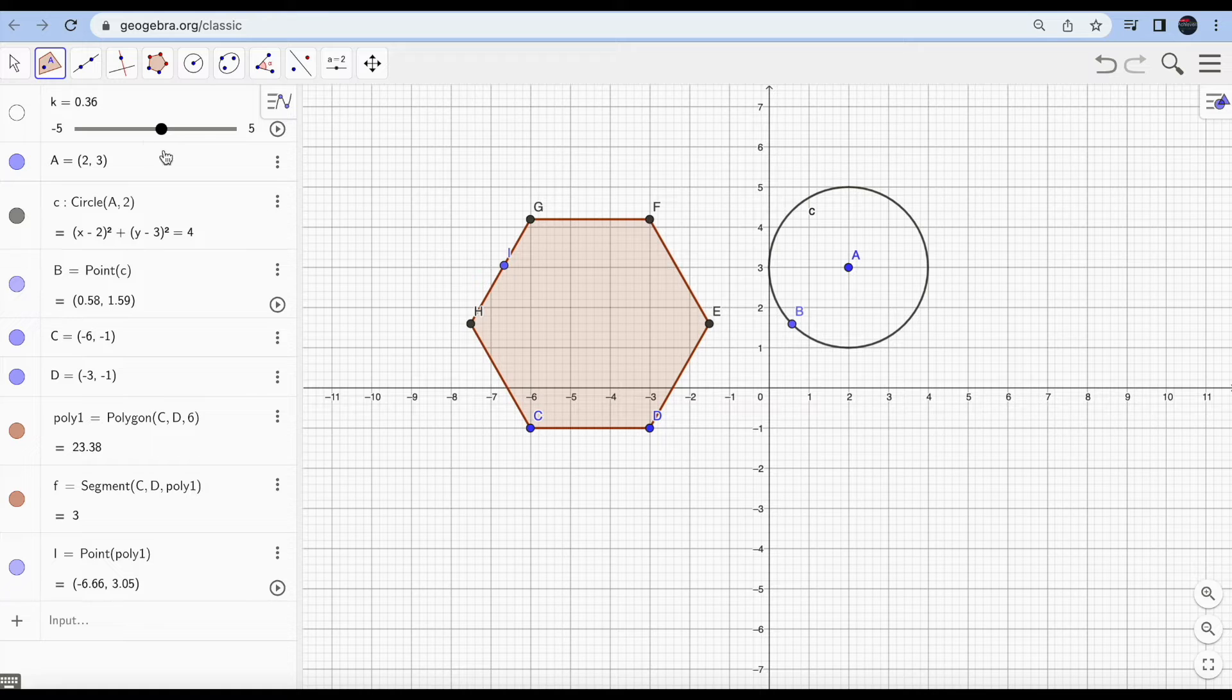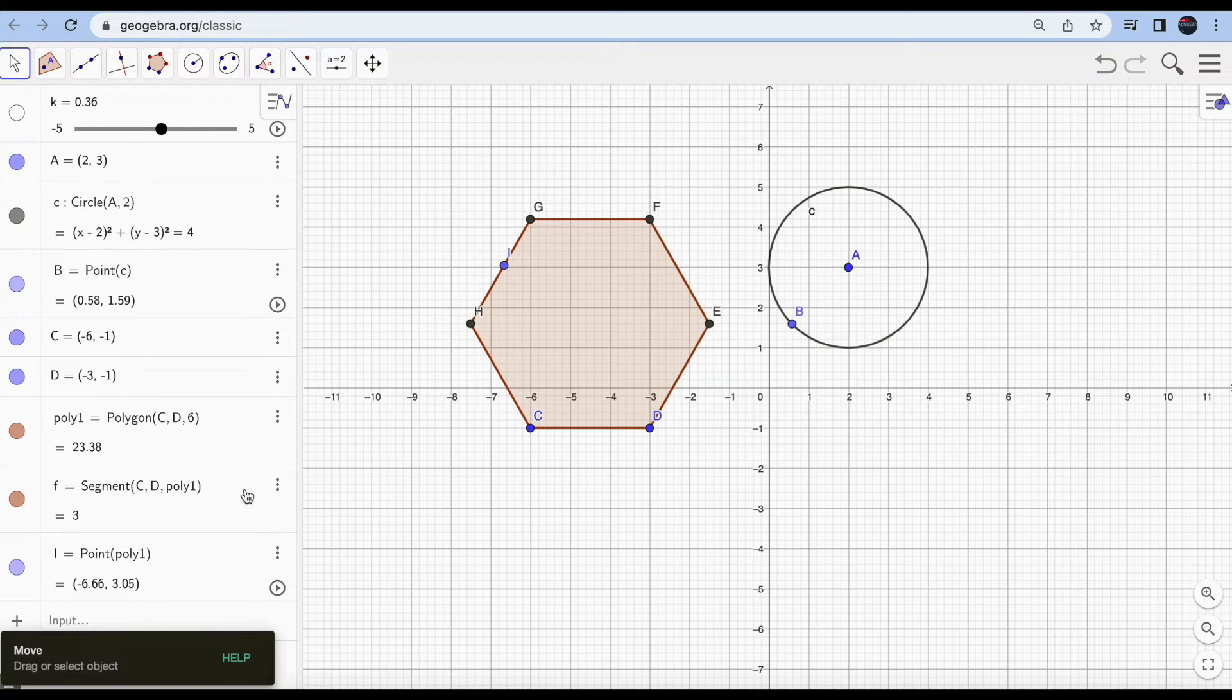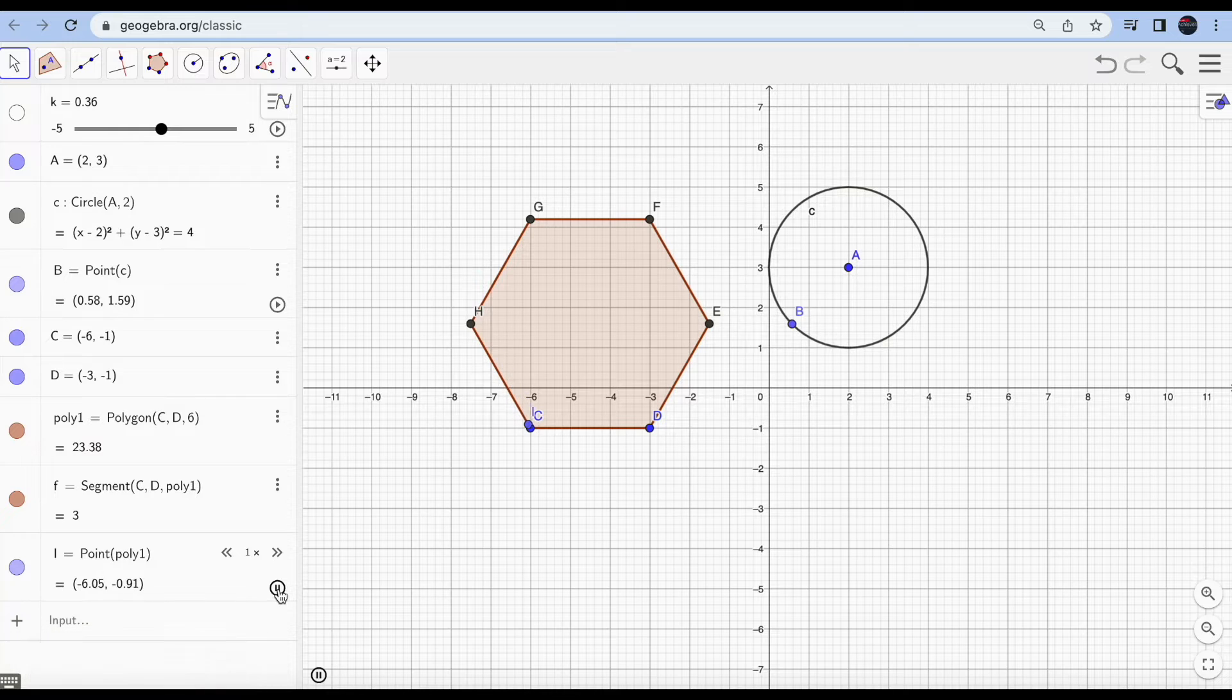I'm going to use six vertices. The same thing, I'm going to go to point, point on object, hit on the boundary. Okay, look. You just click on this play button so your point is moving.